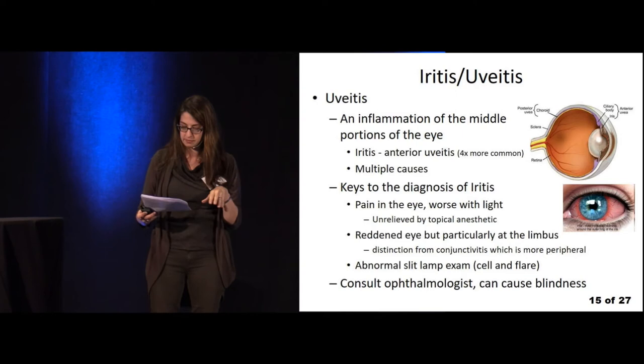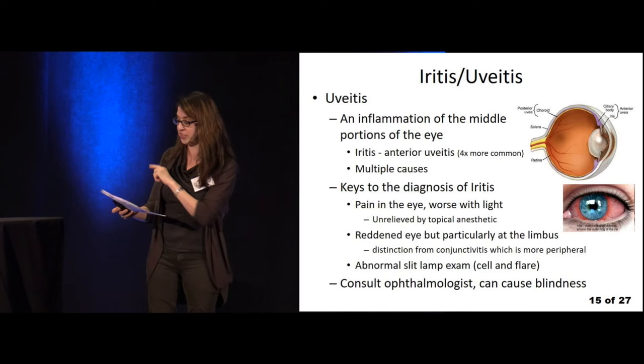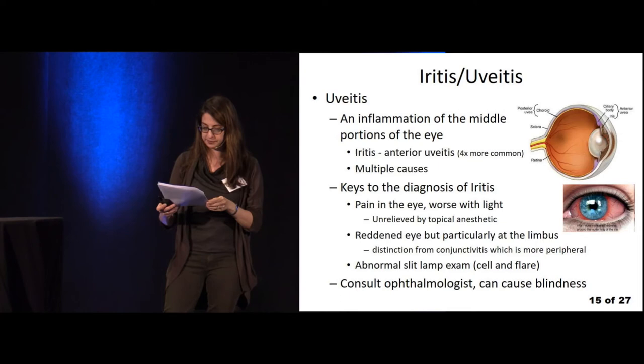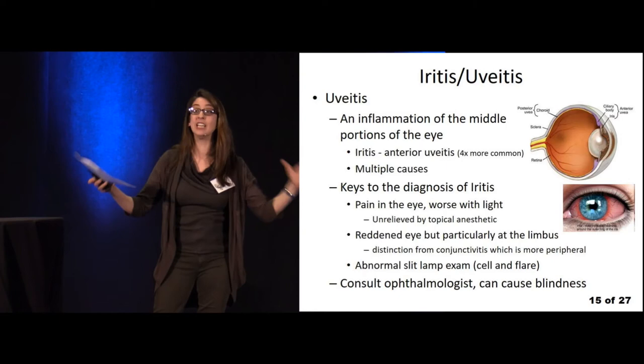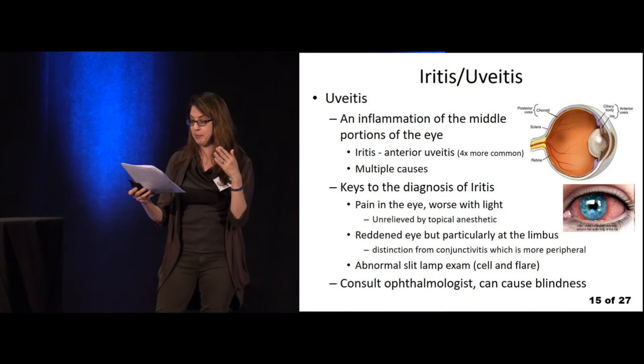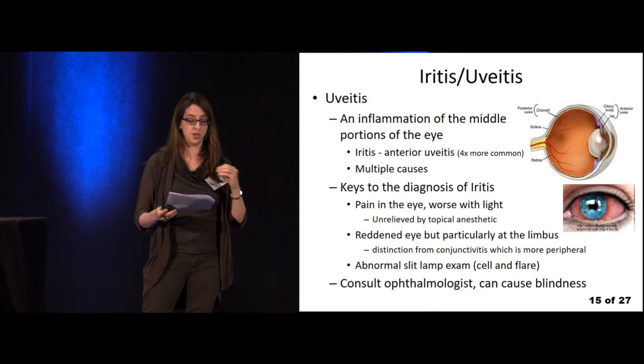Remember the limbus — the junction between cornea and sclera. If you see heightened erythema around that area, that should raise your suspicion for iritis. On slit lamp exam, you're looking for cell and flare in the anterior chamber. Make sure to consult an ophthalmologist because this can cause blindness, so it's really important to make this diagnosis and refer appropriately.